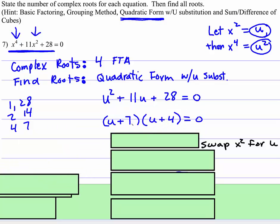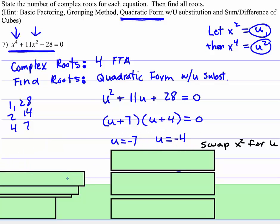So we're just going to factor that. So we're going to have u plus 7 times u plus 4. And then look at what we have. U is equal to negative 7. U is equal to negative 4. But remember, we don't want to know what u is equal to. We need to solve for x.